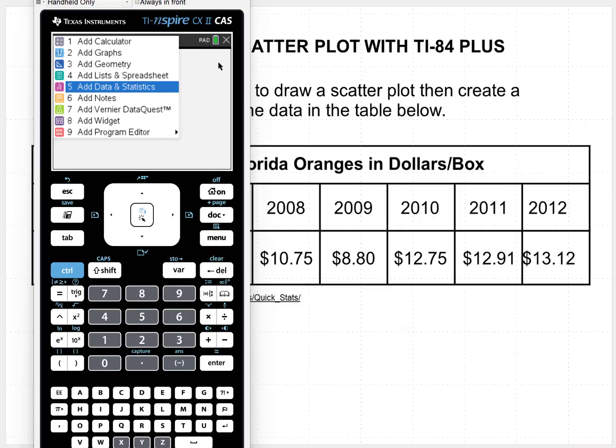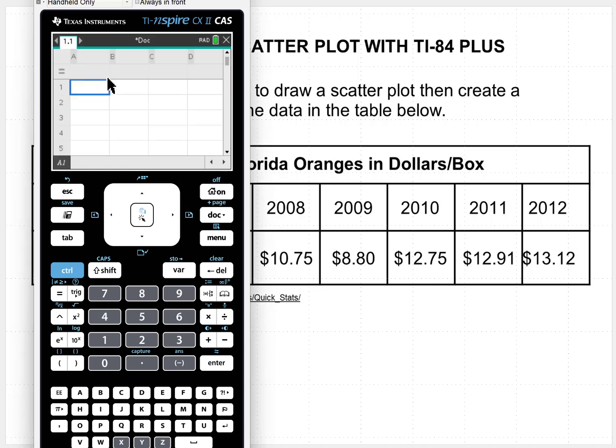Next let's take a look at creating a scatter plot using the fresh market price of Florida oranges in dollars per box. I'm going to model that with the TI Inspire calculator and add first of all add list and spreadsheets. Now in your notes you'll have a handout in the packet for how to make a list and spreadsheets. So I'm going to go here and call the x-axis the year.